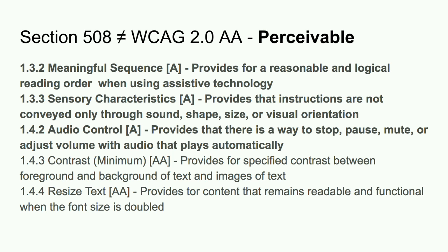One thing that's different in WCAG is providing a meaningful sequence. As you're tabbing through a website with a keyboard or screen reader, it should follow a logical order that a sighted person would be able to follow — going from top left to bottom right in European-based languages, structured in a way that allows people to consistently navigate. You should also provide instructions that aren't conveyed only through shape, and ensure there are more audio controls and a minimum color contrast between your lightest and darkest colors.